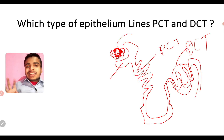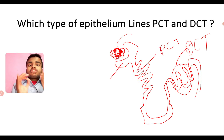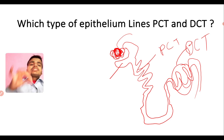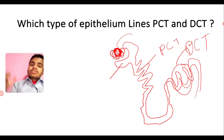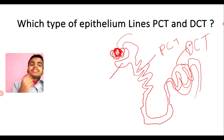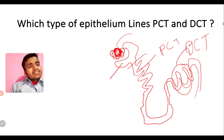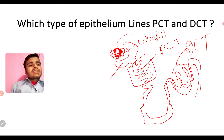Please try to correlate the epithelium type with the function. The epithelium present in each part is based on its respective function. In the PCT, the primary function is absorption, and ultrafiltration occurs from the glomerulus.